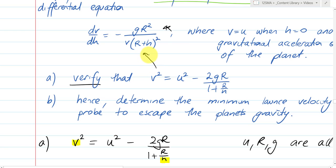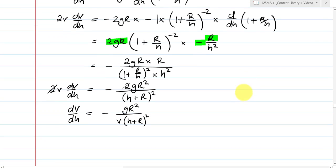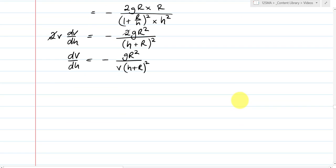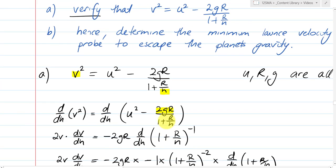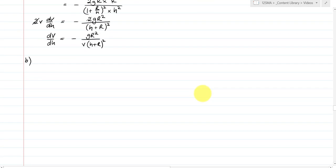Now I could solve that differential and it might be worth you having a go at it. But it is pretty tough to solve. And our u helps us find our c. But otherwise it's pretty tough to solve. And now part b says, hence determine the minimum launch velocity for the probe to escape the planet's gravity.